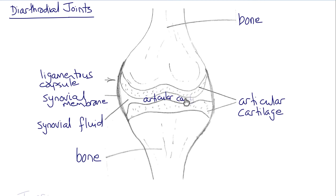And the space between the cartilage is called the articular cavity, and the synovial fluid and cartilage allow for a very low friction joint.